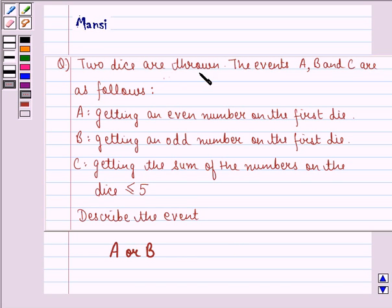The question says two dies are thrown. The events A, B and C are as follows. Event A is getting an even number on the first die. Event B is getting an odd number on the first die. And event C is getting the sum of the numbers on the die less than or equal to 5.